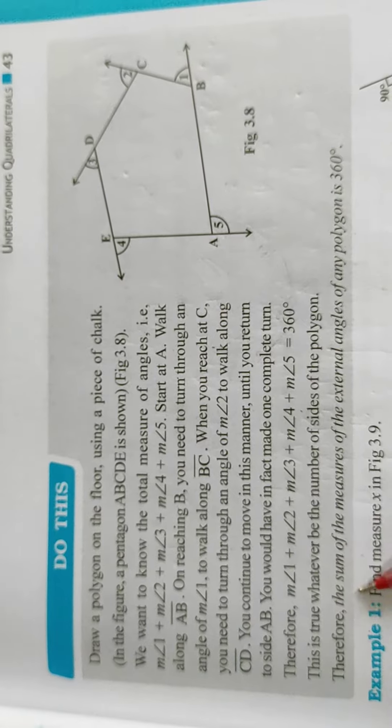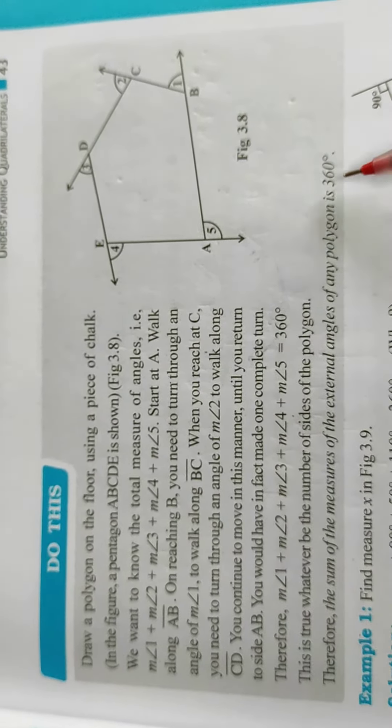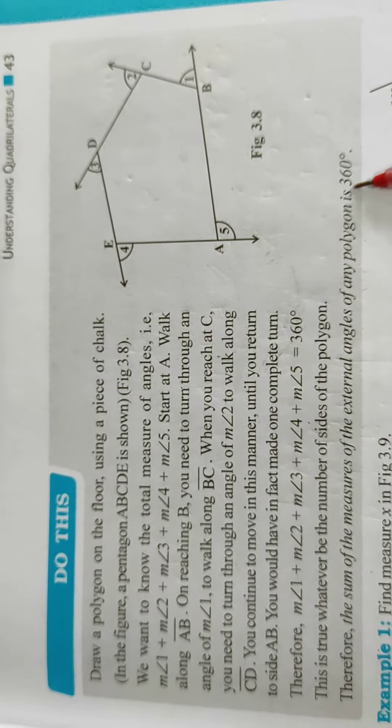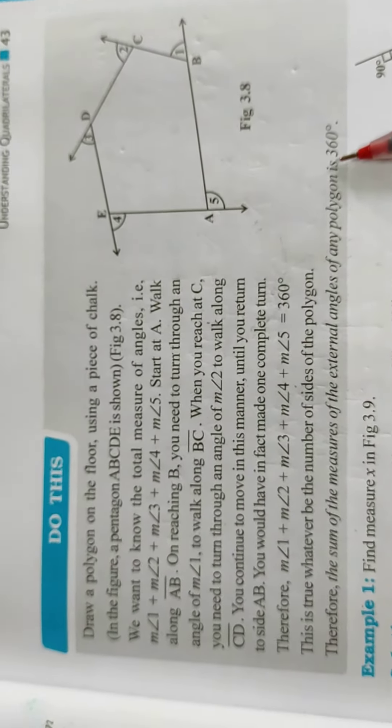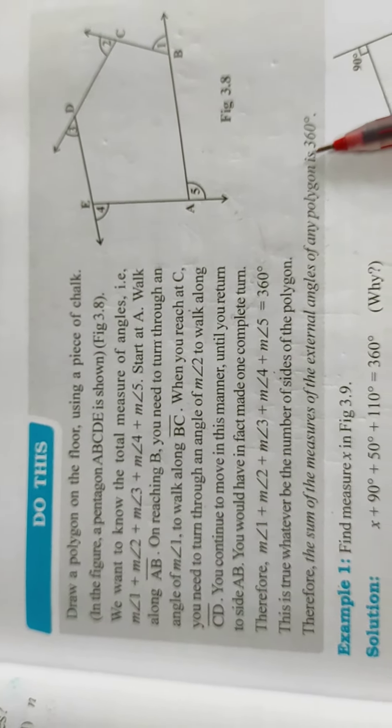So the sum of the measures of the external angles of any polygon is 360 degree. Keep this thing in your mind. Maybe actually in the fill in the blank form, right or wrong, true and false, match the following.